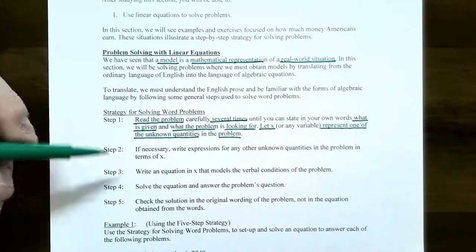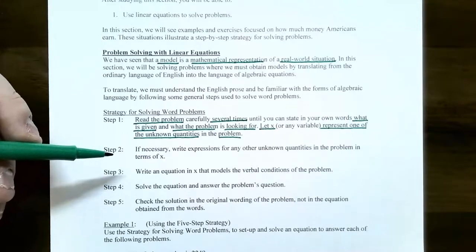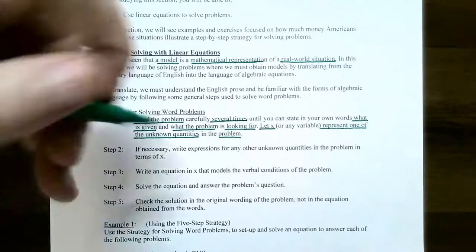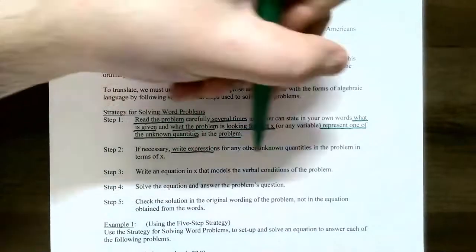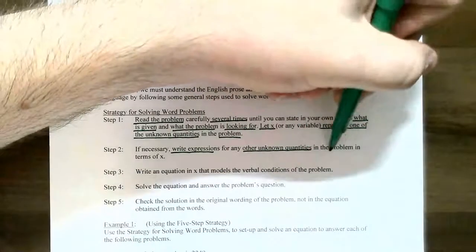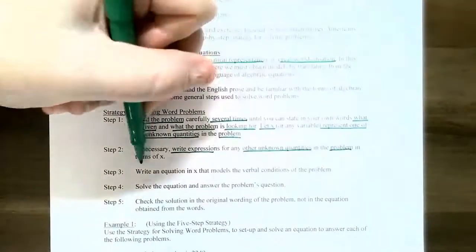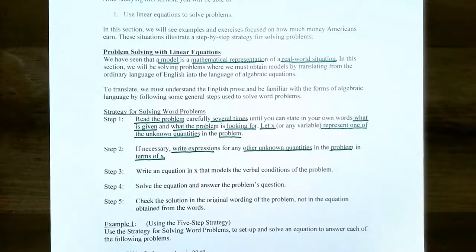Step two: if necessary, if there are several unknown quantities, write expressions for the other unknown quantities in terms of x. Sometimes in problems you might be given information that can help you relate the unknown quantity back to what you've already called x.